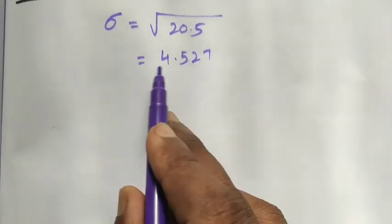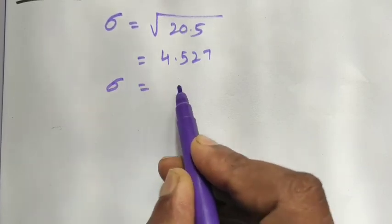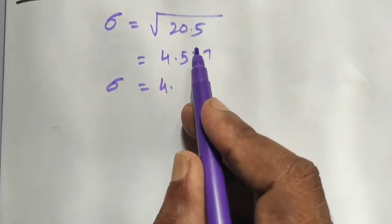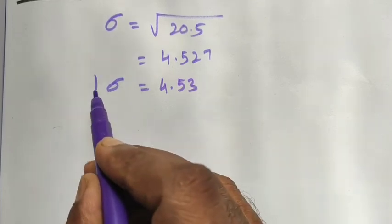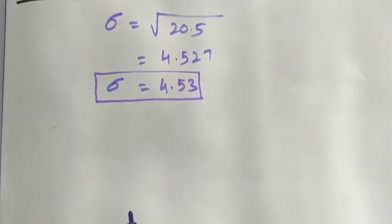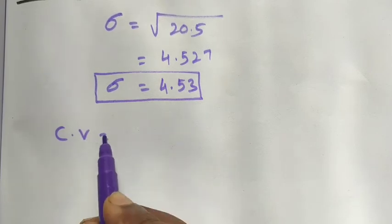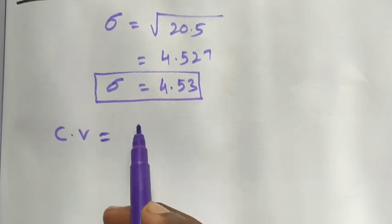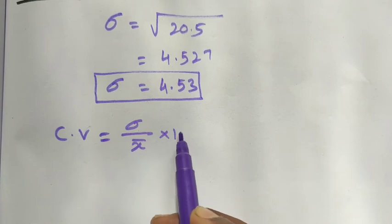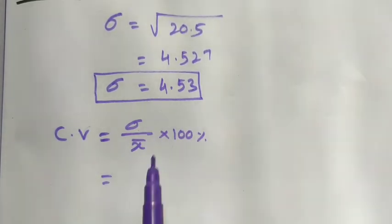Taking only two decimal places: since the third decimal digit is more than 5, we round up, giving σ = 4.53. Now the coefficient of variation formula is CV = (σ / x̄) × 100%.